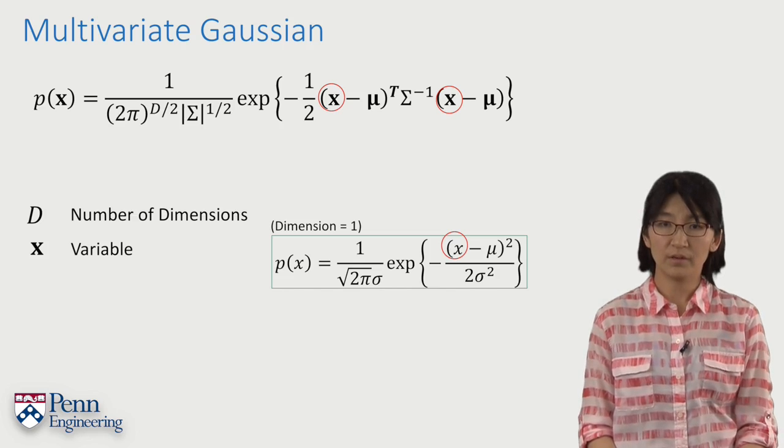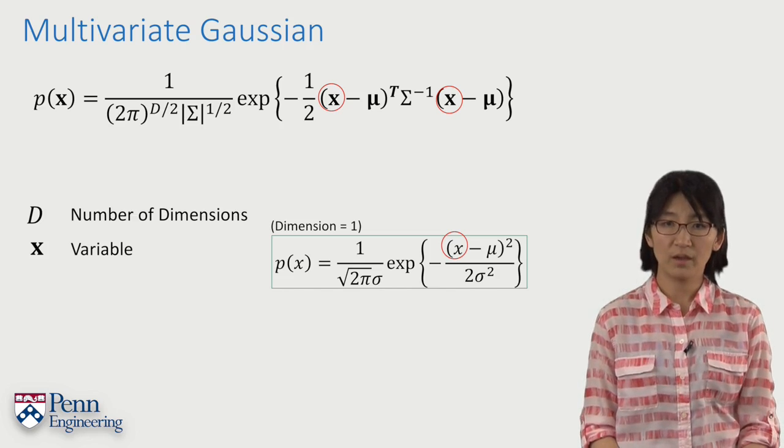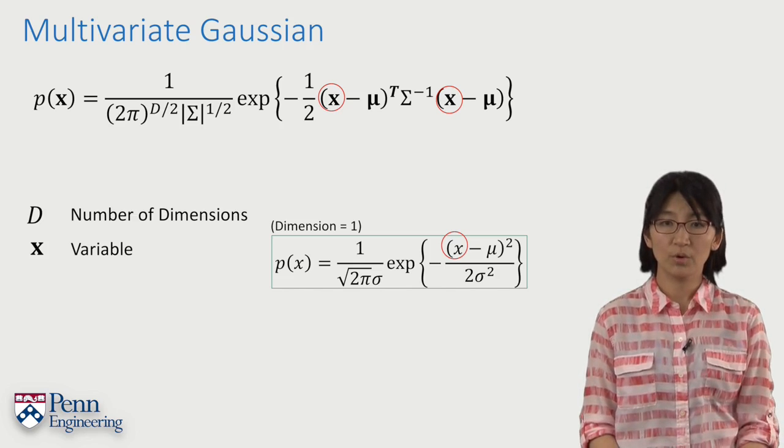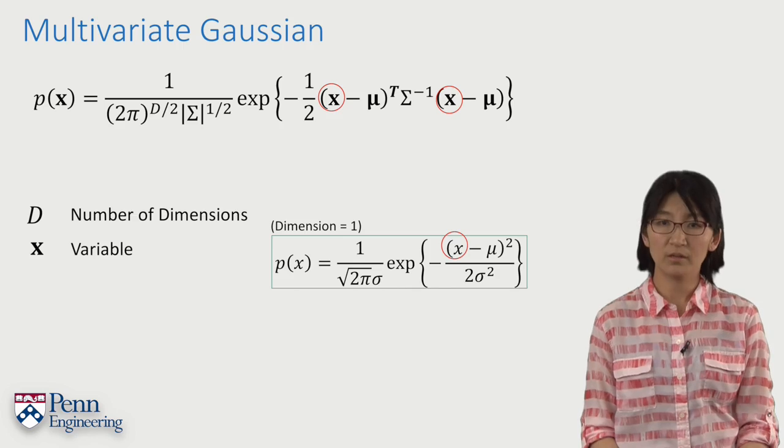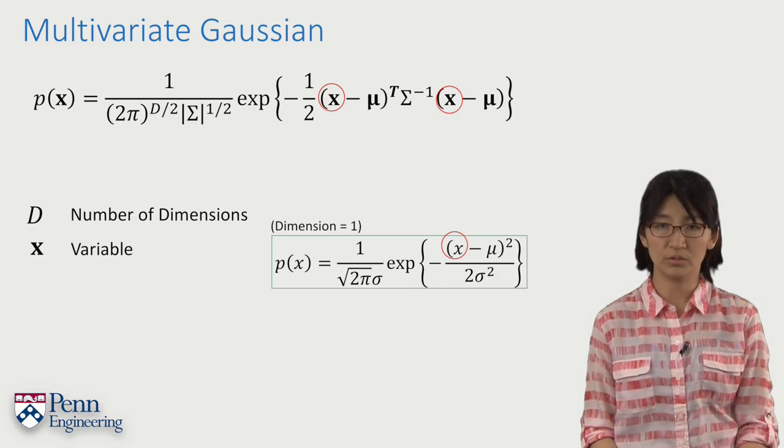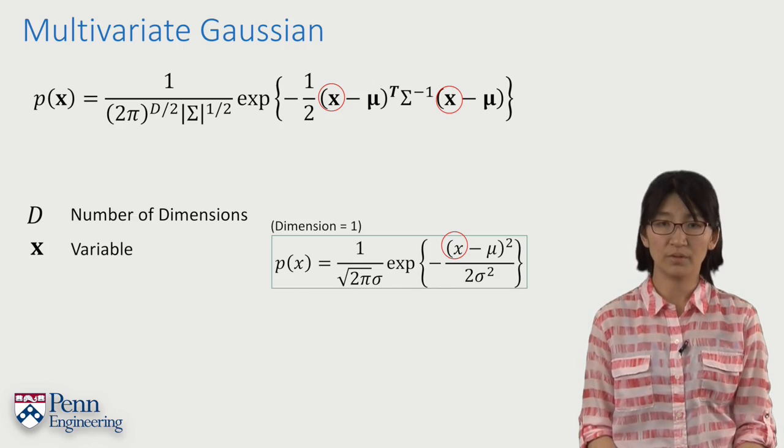To signify that x is now a vector, we make x bold. We want to know the probability that x lies within our Gaussian distribution. We call this term P of x.